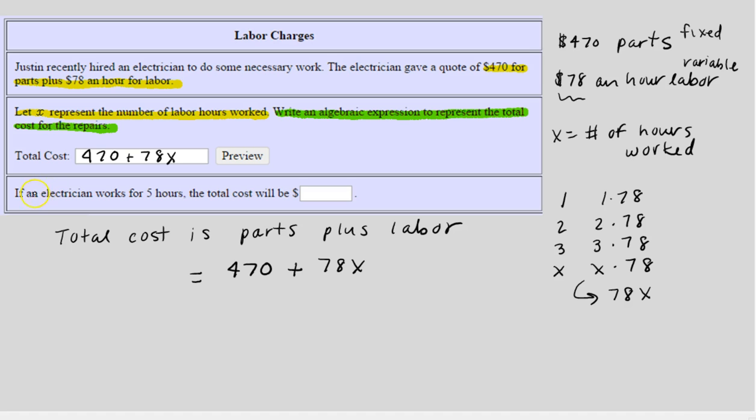And now there's a second part, so let's look at this. If the electrician works for 5 hours, what will the total cost be? So back up here we have the total cost equals this expression. Now we're given that he's going to work 5 hours.